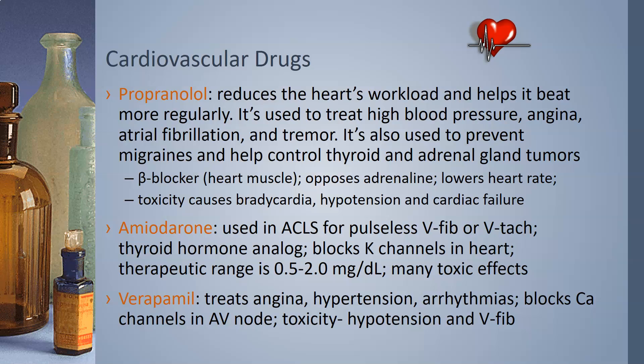Amiodarone is used in ACLS — Advanced Cardiac Life Support — for pulseless V-fib, ventricular fibrillation, or ventricular tachycardia. It is a thyroid hormone analog that blocks potassium channels in the heart. The therapeutic range is 0.5 to 2.0 milligrams per deciliter and it has many toxic effects.